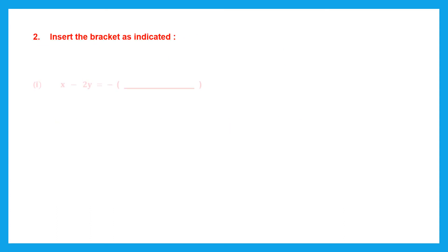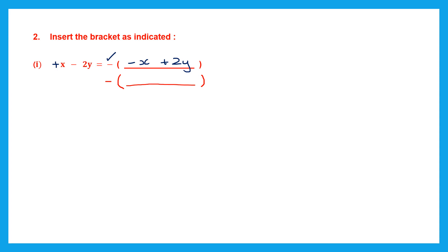Insert the bracket as indicated. Question 1: x minus 2y. We have a minus sign before the bracket, so we must change the sign of all terms. Plus x will become minus x, and minus 2y will become plus 2y. Rewriting by putting the positive sign first: plus 2y becomes 2y at the beginning, then minus x. Only the order is changed — the answer is the same.